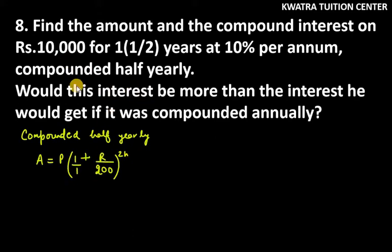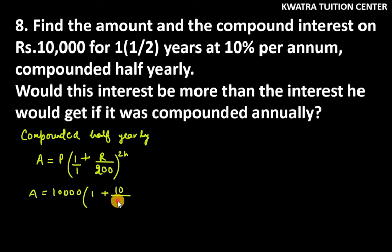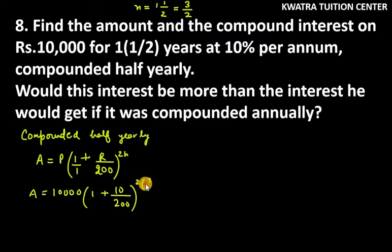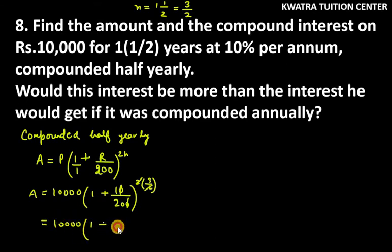Now here, the principal given is 10,000. So it is 1 plus r — rate is 10%, so 10 over 200. Now 2n — what does 2n mean? n is 1 and a half, which can be reduced to 3/2. If you put 3/2 in place of n, then 2n gives you 3, so the power is 3. This simplifies to 10,000 × (1 + 1/20) raised to power 3.